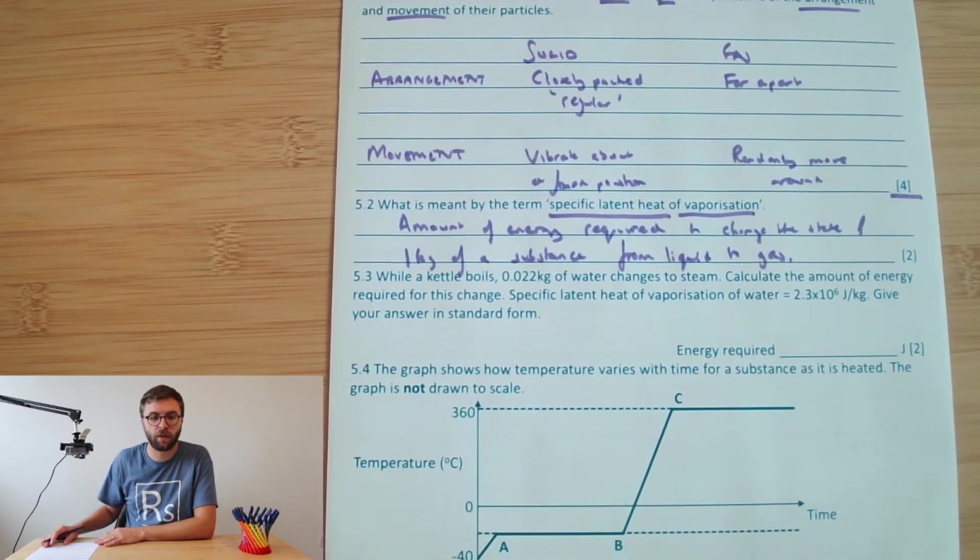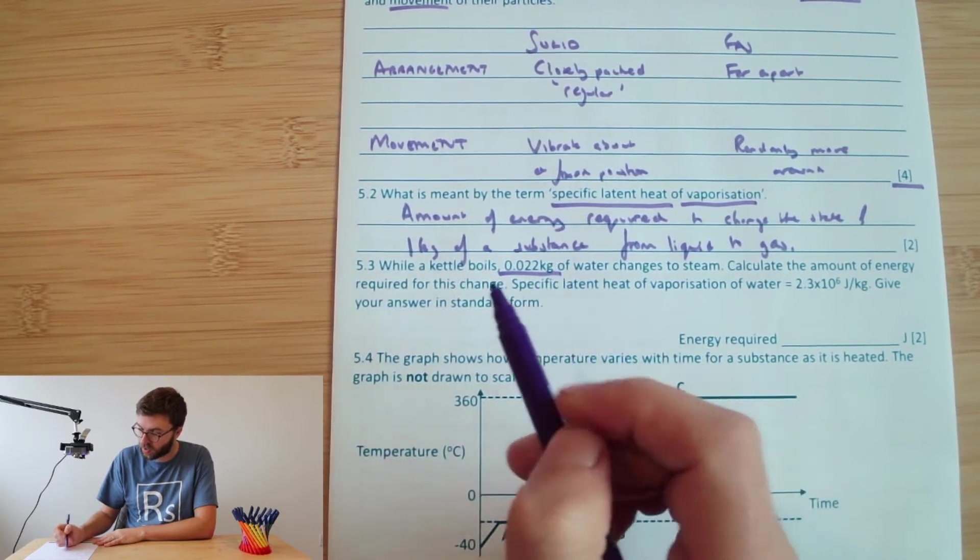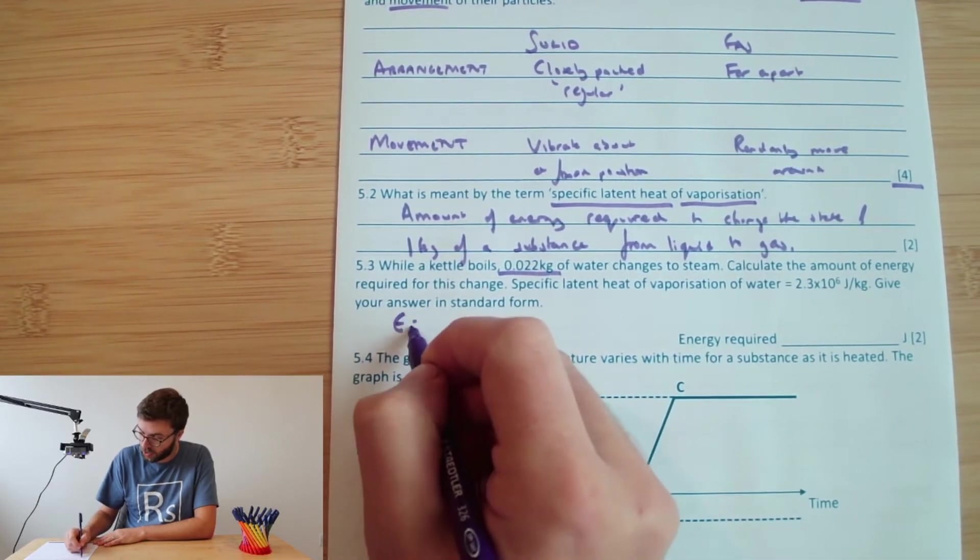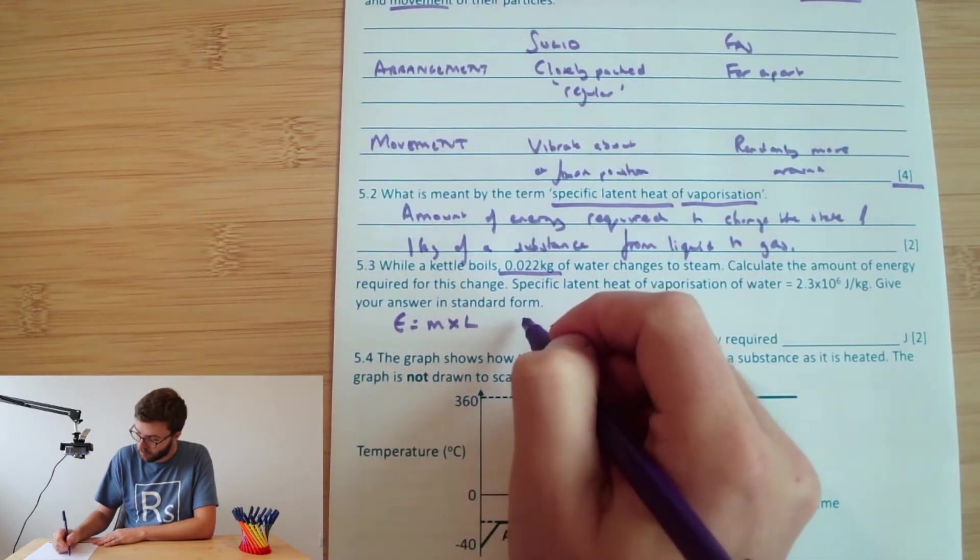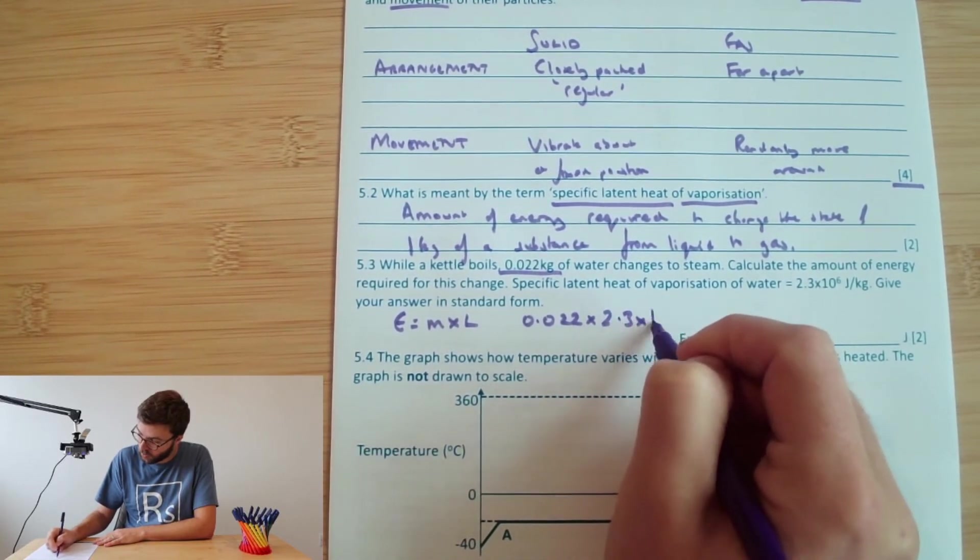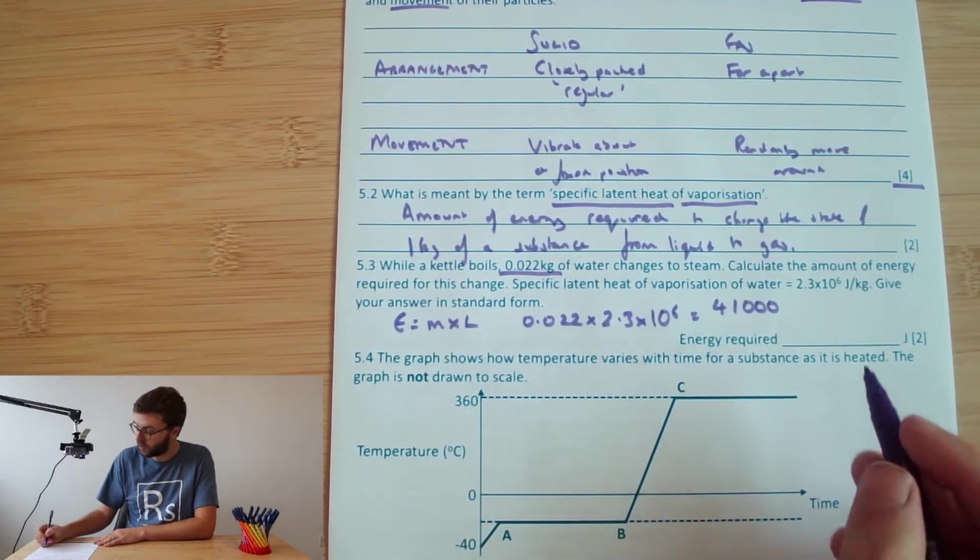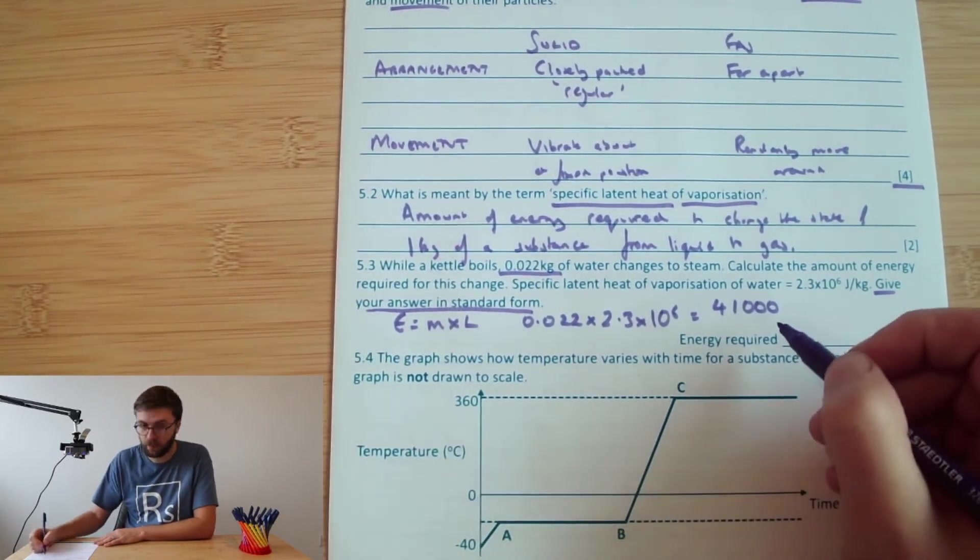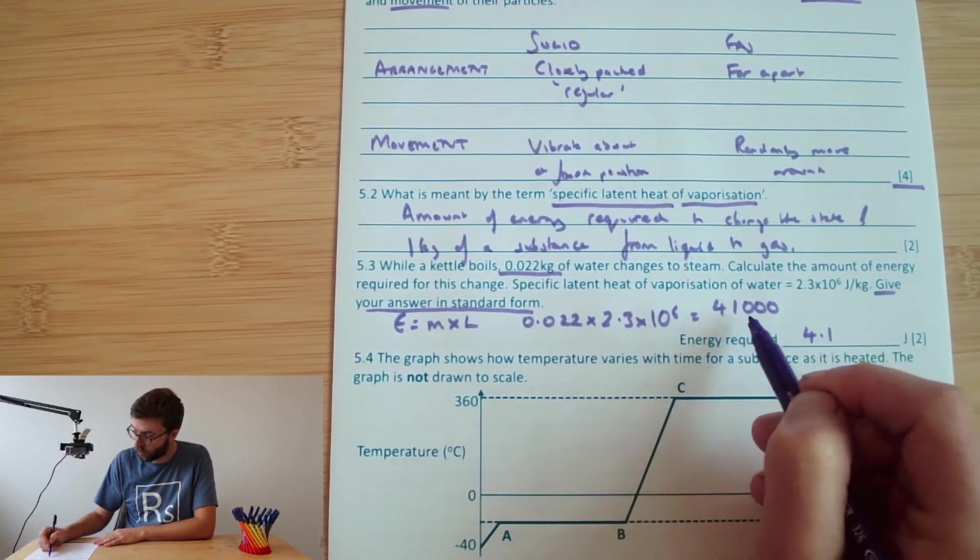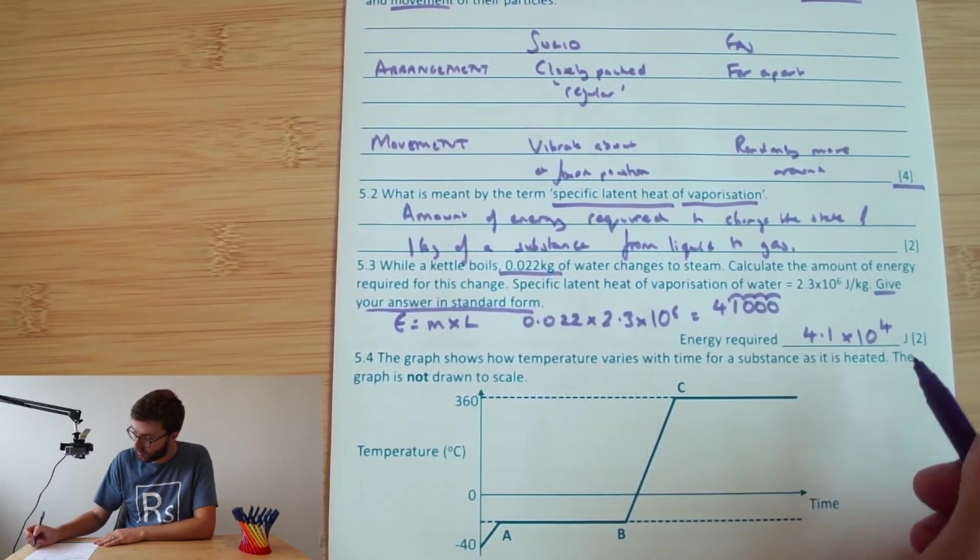Okay, now question number three. While the kettle boils, 0.022 kilograms of water changes to steam. So we see we're already in our standard units for mass. Calculate the amount of energy required for this change, and it gives us the specific latent heat of water. So the energy transferred equals the mass times the specific latent heat. So the mass was 0.022 multiplied by the specific latent heat of water, the vaporization, which is 2.3 times 10 to the 6. And if we work that out, that gives us 41,000. Just remembering it says give our answer in standard form. So when we're using standard form, we want to use a number between 1 and 10. So we've got 4.1. And if we were putting the decimal place there, we're moving it one, two, three, four places. So 4.1 times 10 to the 4 joules.